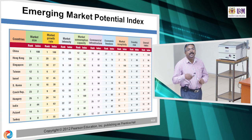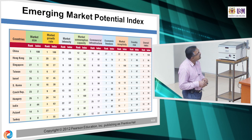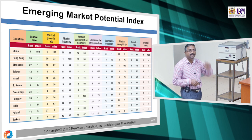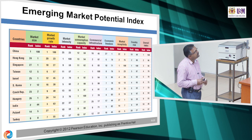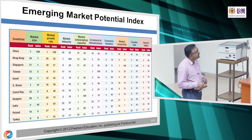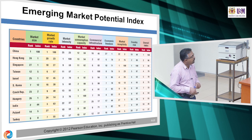In terms of the Market Potential Index — covering market size, growth rate, intensity, and market receptivity — China ranks number 1 overall, also leading in market size, market growth rate, and economic freedom. Number 2 is Hong Kong, number 3 is Singapore, number 4 is Taiwan, followed by Israel, South Korea. Turkey, one of the most successful Islamic countries, ranks around number 10-11, with Poland also in that range.